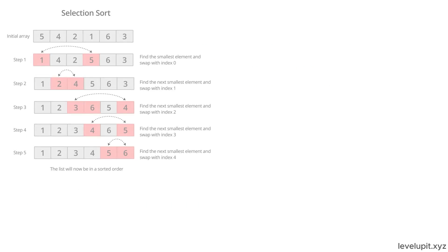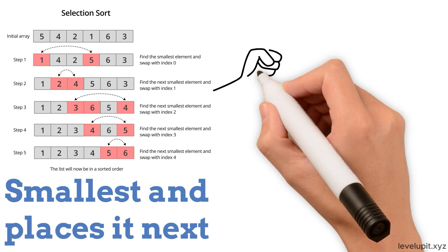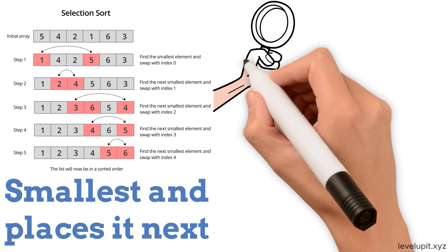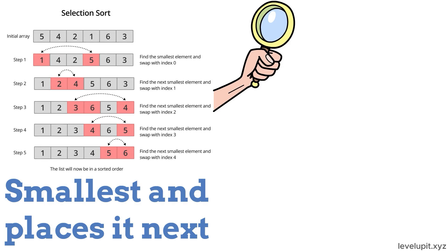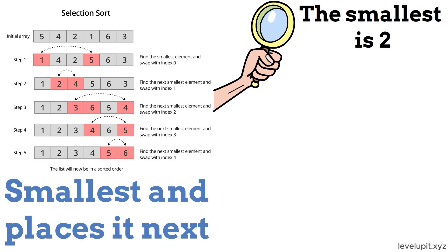Selection sort scans for the smallest and places it next. With 5, 1, 4, 2, find the smallest, 1, and put it first to get 1, 4, 2, 5. Now from the remaining, the smallest is 2. Place it next. Continue until done.